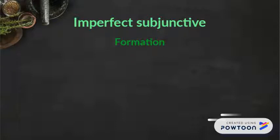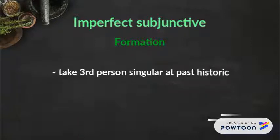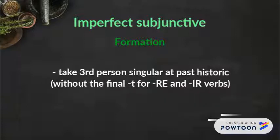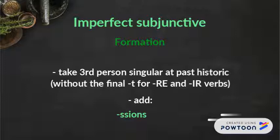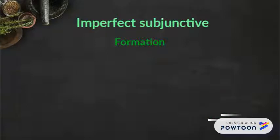To form the imperfect subjunctive, take the third person singular form of the verb at the past historic, without the final T for RE and IR verbs, and add: SSE, SSES, circumflex accent T, SSIONS, SSIEZ, SSENT. Let's conjugate PARLER at the imperfect subjunctive.